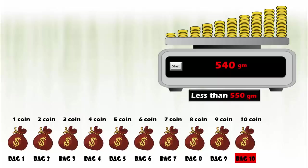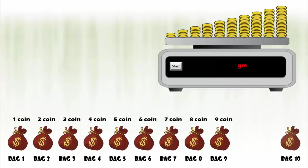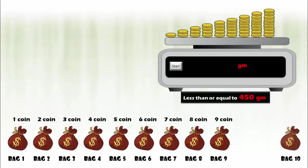A logical person must always find the best possible approach by optimizing the number of objects and iterations. So in this case, even if we exclude bag 10 from weighing, we can still figure out the defective bag. The total weight of combination would be less than or equal to 450 grams.